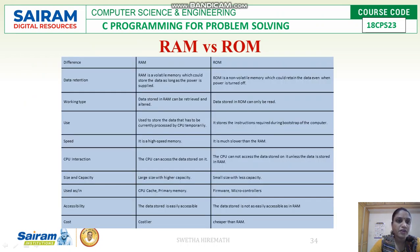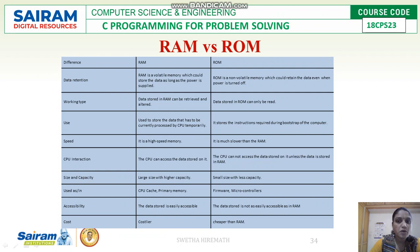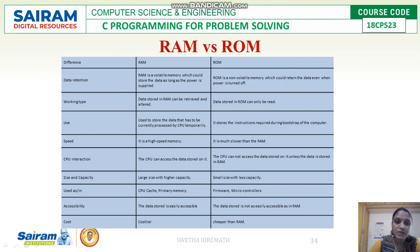The differences between RAM and ROM cover data retention, working type, use, speed, CPU interaction, size, capacity, and cost. RAM is volatile whereas ROM is non-volatile. Data in RAM can be retrieved and altered, but ROM can only be read. RAM stores data currently being processed by the CPU; ROM stores instructions required during the bootstrap of the computer. RAM is high-speed memory whereas ROM is slower by comparison.